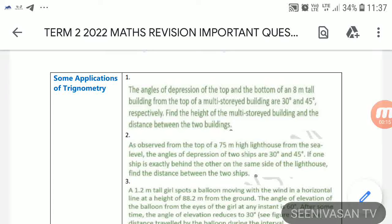First, some applications of trigonometry. The angle of depression of the top and the bottom of an 8 meter tower building from the top of a multi-storied building are 30 degrees and 45 degrees respectively. Find the height of the multi-storied building and the distance between the two buildings.